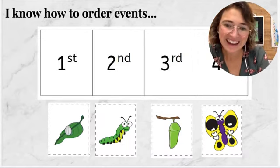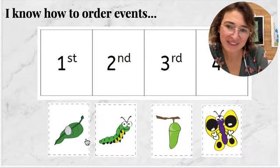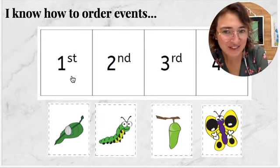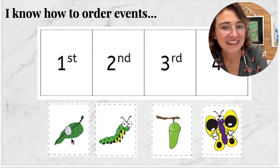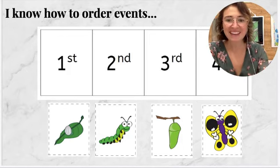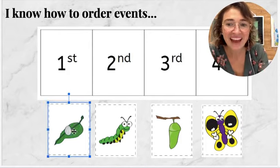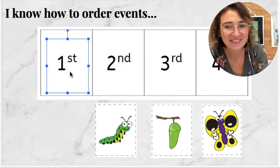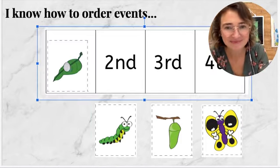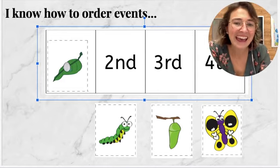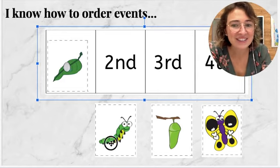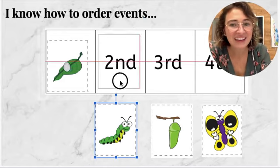Now we will do another. First, there's a tiny egg on a leaf. Then the egg grows into a caterpillar.